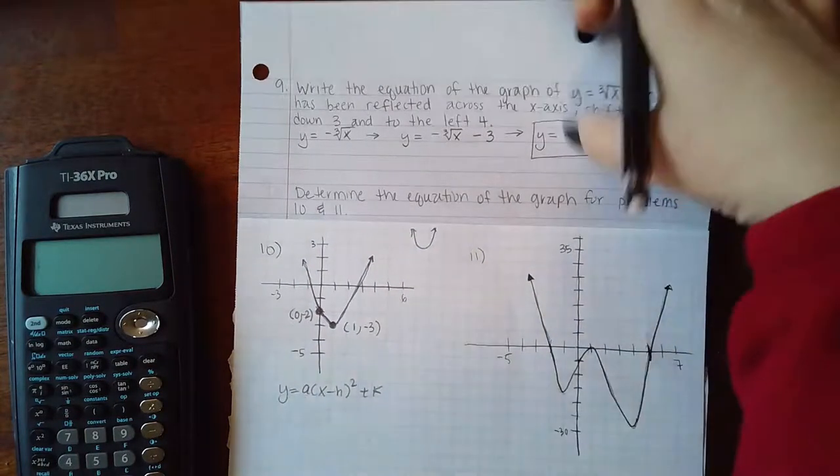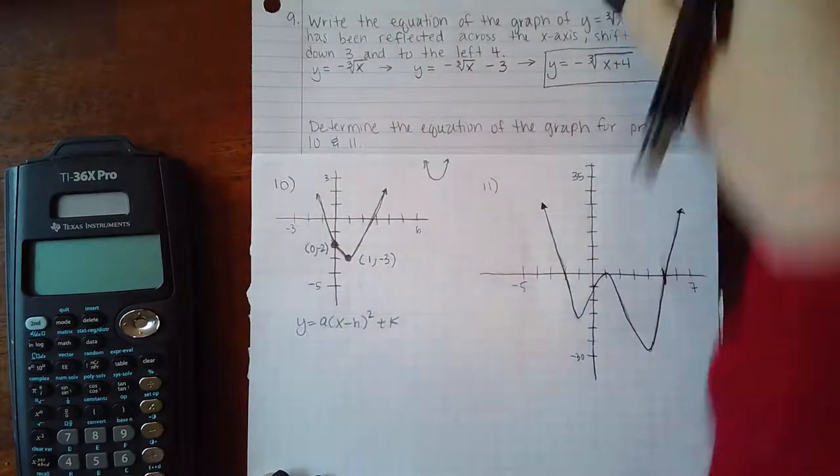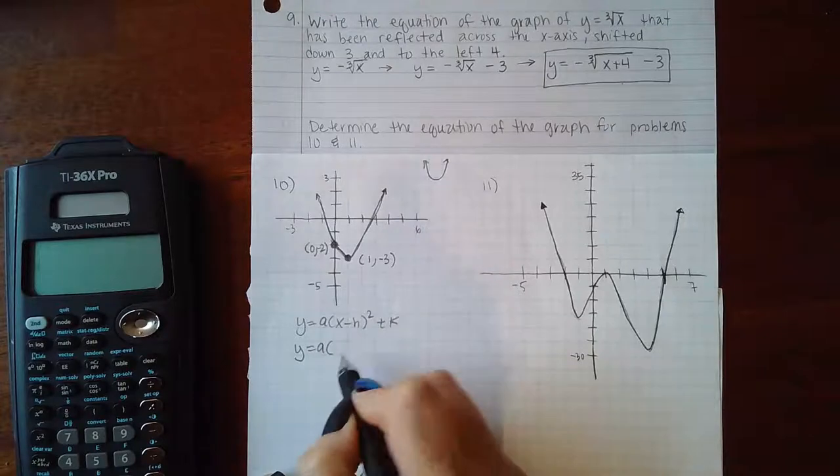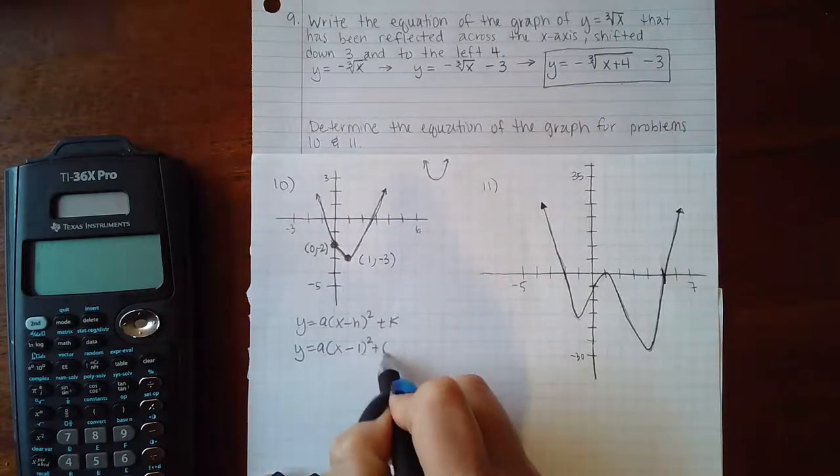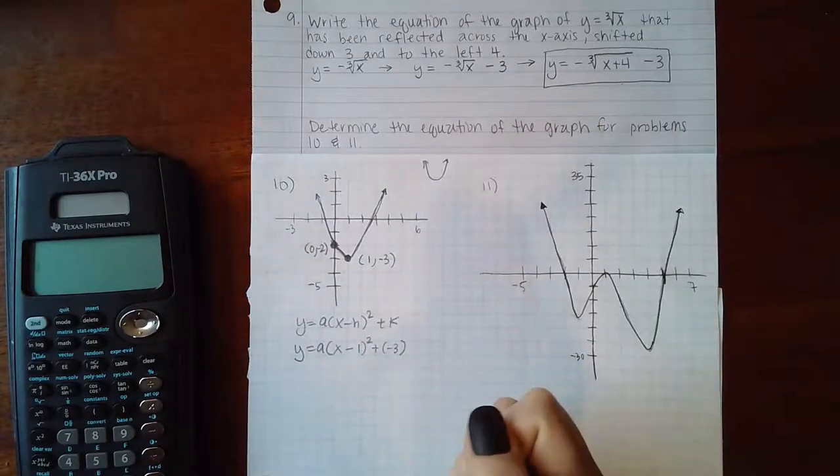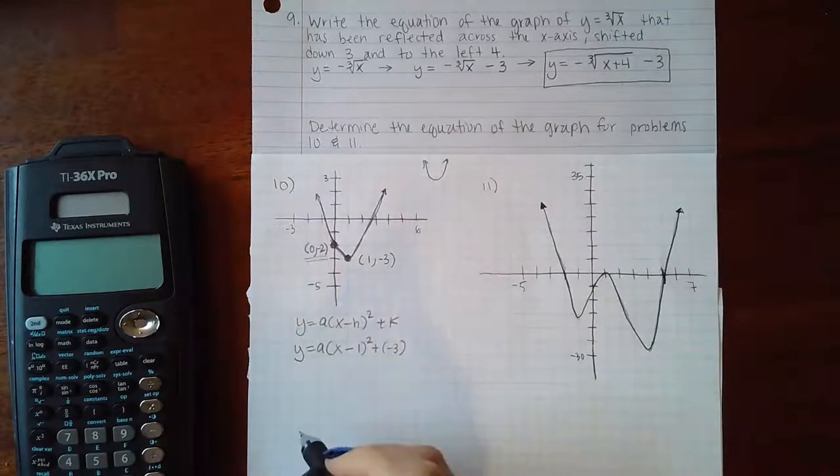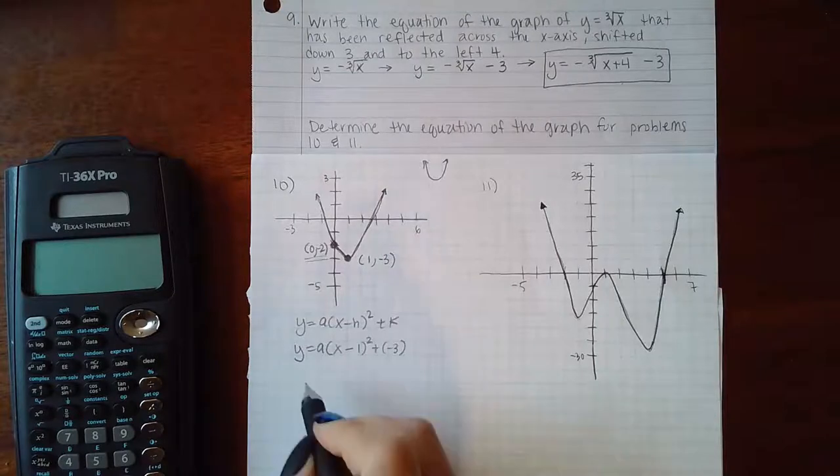I'm going to plug in my h and my k first. When I plug in h and k, I get x minus 1 squared plus a negative 3. Then if I plug in the x and y values here, that'll help me figure out what a is.